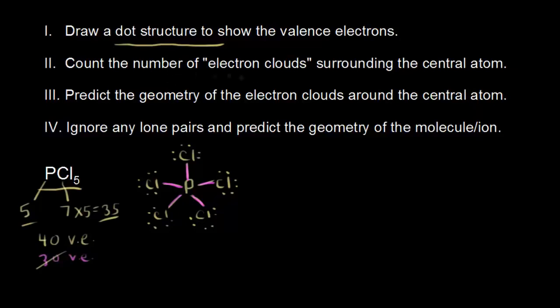So now step 2: we're going to count the number of electron clouds that surround our central atom. An electron cloud is just a region of electron density. So I could think about these bonding electrons as a region of electron density around my central atom — that would be one electron cloud — and these bonding electrons as another. We have a total of 5 electron clouds around our central atom.